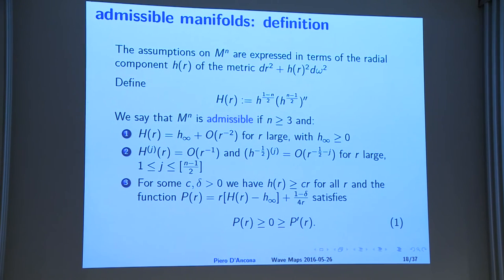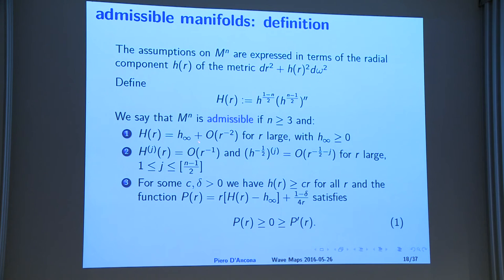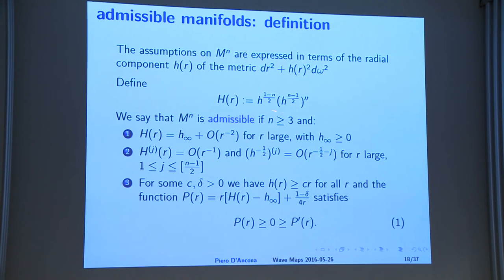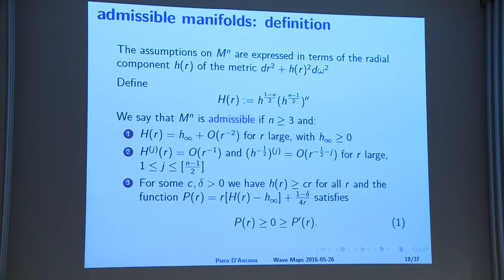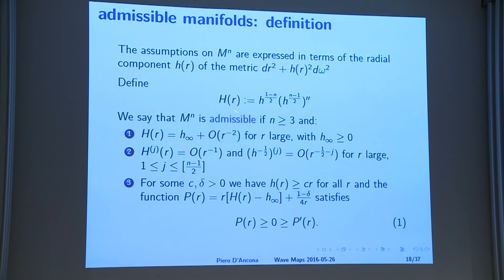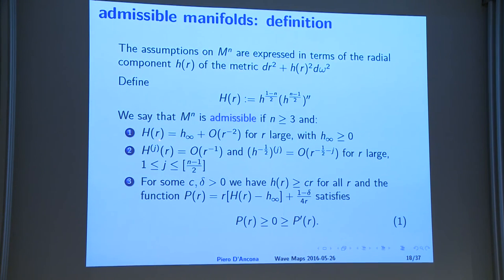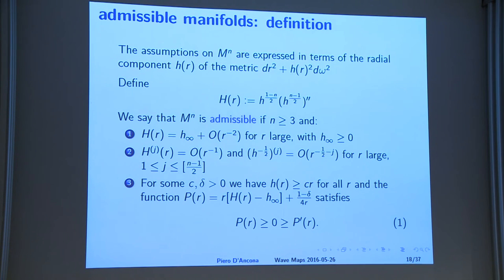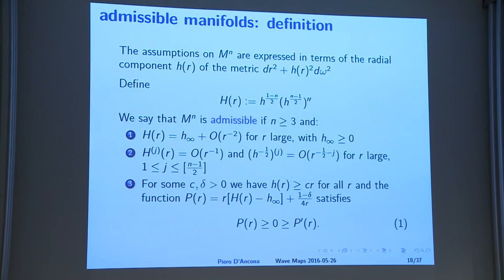This is the definition of the admissible manifolds. I try to get the biggest possible generality with a list of conditions. The key quantity involves H, the function driving the base metric. The first requirement is asymptotic: this function tends to a non-negative constant for r large with a certain rate — essentially convexity at infinity. For instance, for hyperbolic manifolds this constant is (n-1)/2. The second condition says that for large r you have a certain number of derivatives decaying like 1/r — typically trivial to satisfy.